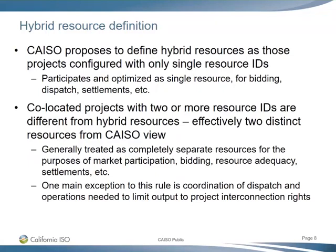Hybrid resources will essentially be those single resource ID combinations, participating as a single resource optimized by the resource owner or scheduling coordinator — treated as a single resource for bidding, participation, dispatch, and settlements. Co-located projects are still addressed through this initiative because they include combinations of different resources, but we're differentiating those and calling them co-located projects. Those have two or more resource IDs at a single point of interconnection, are treated as completely separate for market participation, bidding, RA, and settlement. The main exception is that they could have a coordinated dispatch limited to their total overall interconnection rights.